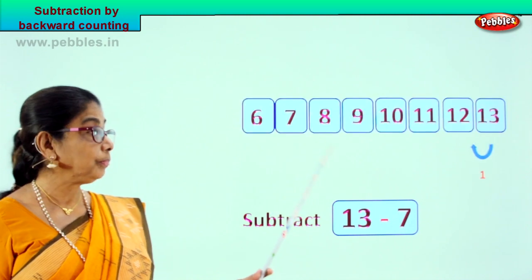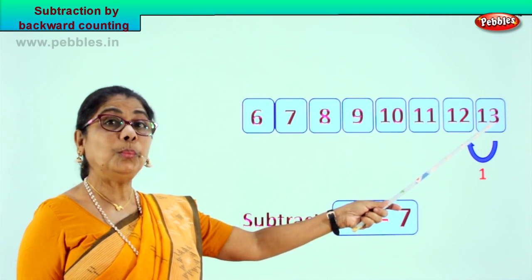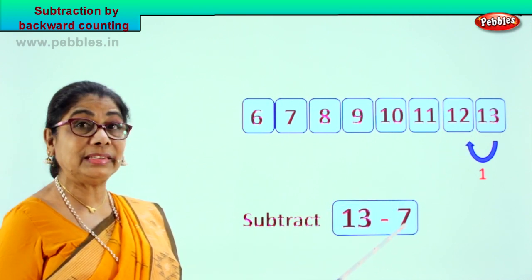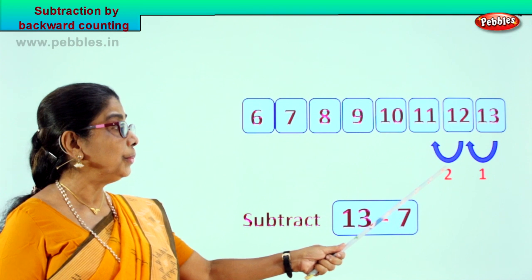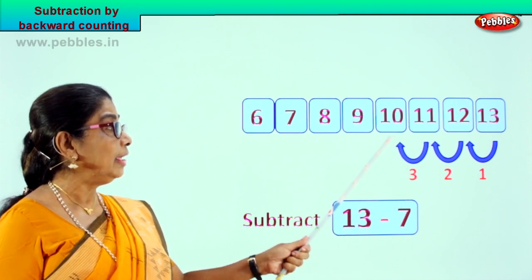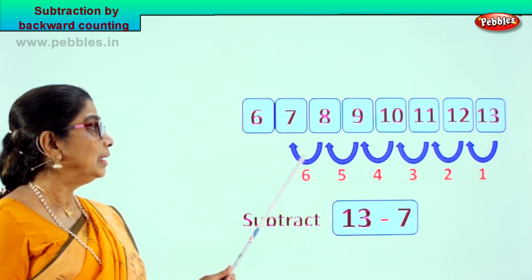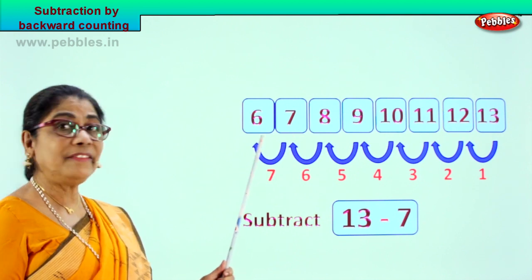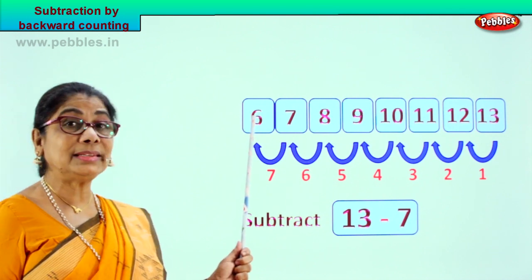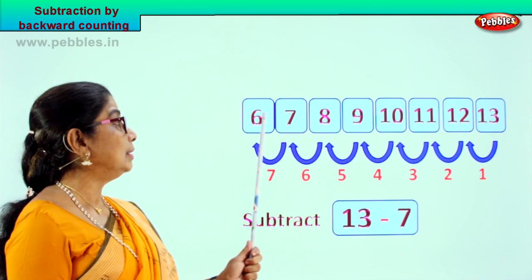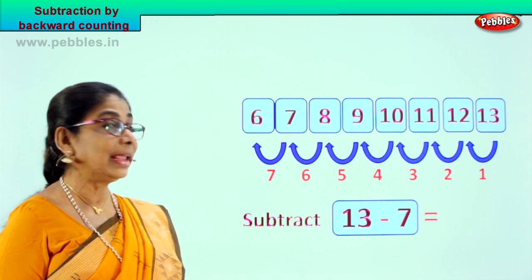Now we have 13 here. From 13 we are going to count backward 7 steps. 1, 2, 3, 4, 5, 6, 7. We counted 7 steps backward. What is the answer? 6. What will be your answer? Your answer is 6. So you write the answer 6 here.